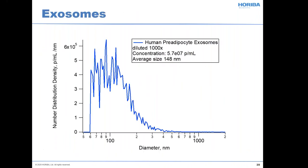Now I'll move on to a couple of virus-like particles. The first that came to mind was exosomes. These are human exosomes at a concentration of about 6×10⁷ particles per ml after dilution, with an average size of 150 nanometers. I see a broad size distribution, which is typical of these materials. They look much like viruses in size, and while they certainly don't behave like viruses once you put them in your body, for the analysis side they look very similar.